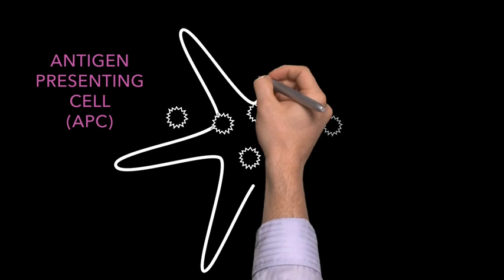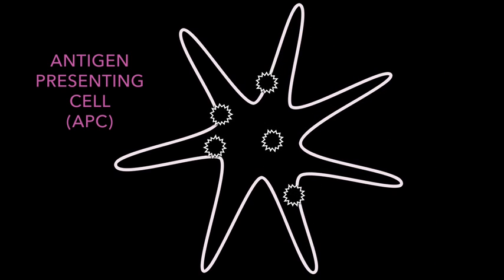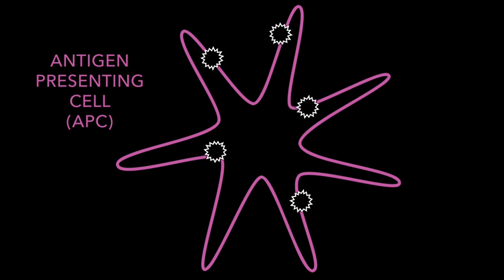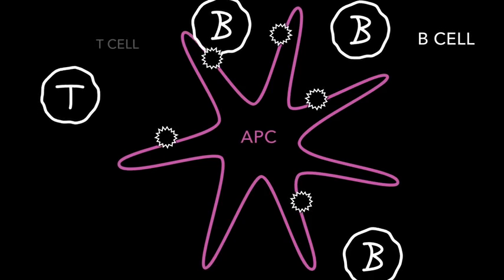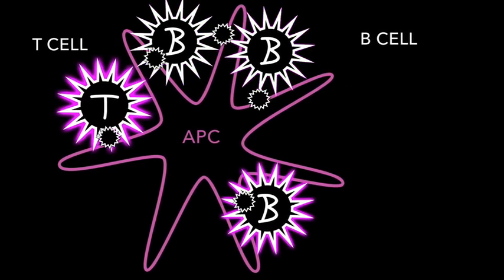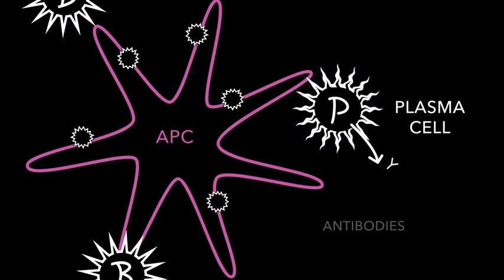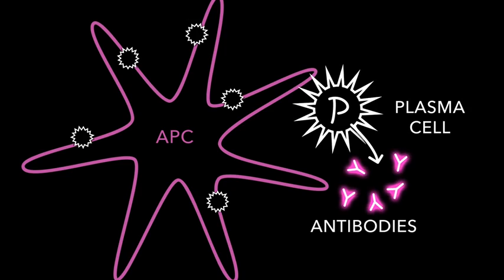Immune cells, called antigen-presenting cells, or APCs, roam the body, seeking out and ingesting tumor antigens. The APCs then activate two other key immune cells, B cells and T cells. When activated by an APC, B cells become plasma cells that make antibodies. These antibodies may mark tumor cells for elimination.